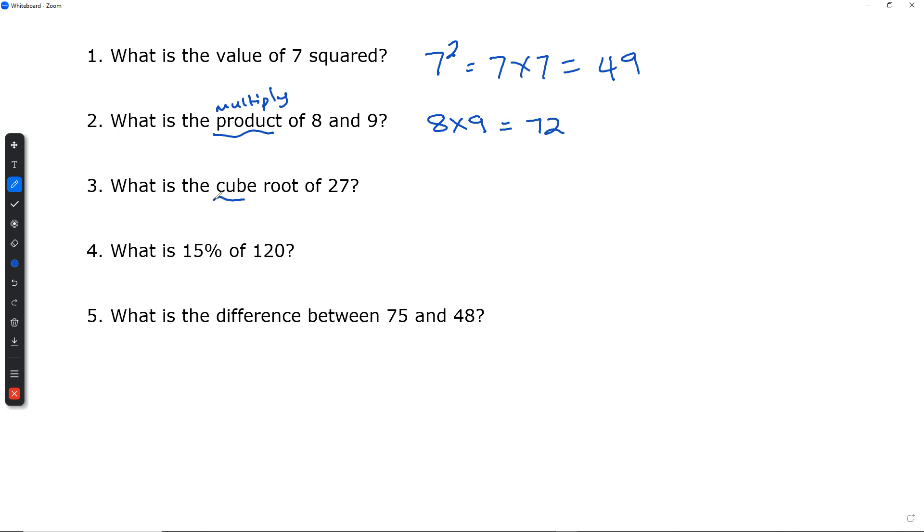What is the cube root of 27? We put a 3 at the top and we put 27 into a bracket. Cube root is the opposite of cubing. Now remember,